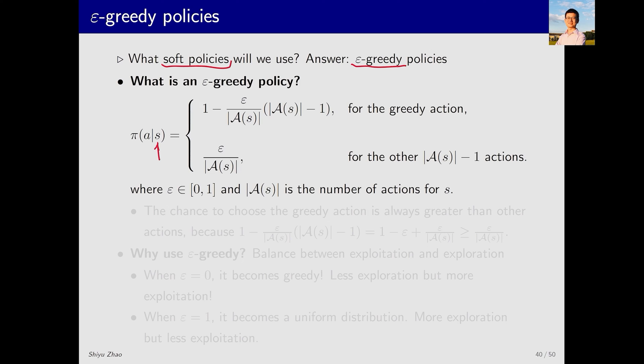In a state S, where there is a greedy action that has the maximum action value, the epsilon greedy policy assigns non-zero probabilities to choosing this greedy action and also other non-greedy actions. While this equation may seem complex at first glance, it is actually quite simple.